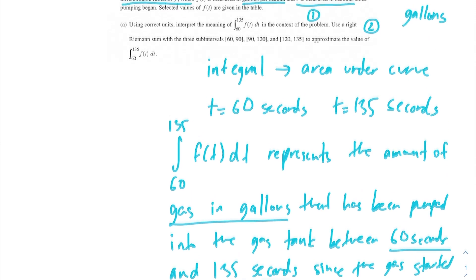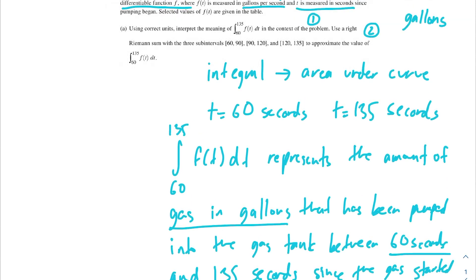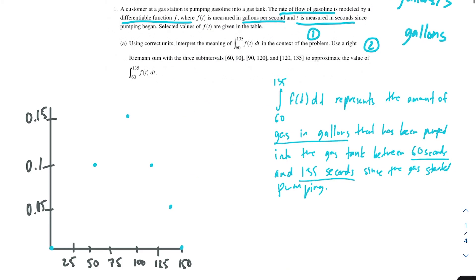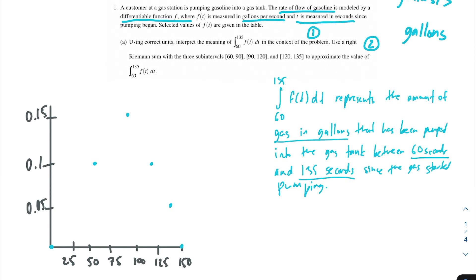The second part of this problem says to use a right Riemann sum with these three subintervals to approximate the value of this integral. I went ahead and graphed each of the points in the table. This is just for the purposes of illustrating what I'm doing with the right Riemann sum — this is not necessarily what the curve looks like. Notice that we're going to be approximating the area under the curve from 60 to 135.